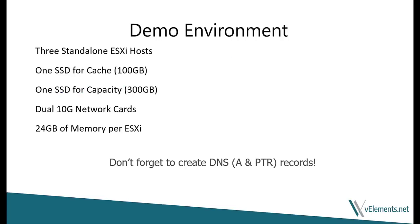I'm going to walk you through a demo. In this environment, I have three standalone ESXi hosts that have a 100GB SSD for cache, one 300GB SSD for capacity, two 10G network cards, and 24GB of RAM. For successful installation of vCenter, don't forget to prepare the prerequisites like creating DNS A and PTR records. Let's go through the demo to show how you can deploy vCenter on one of the three ESXi hosts that you are going to use to build the vSAN cluster.